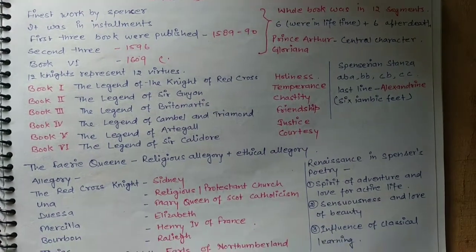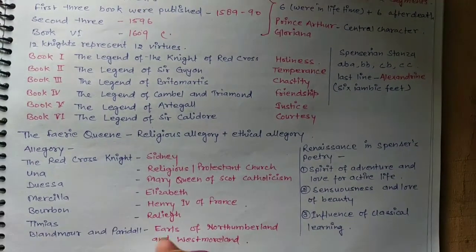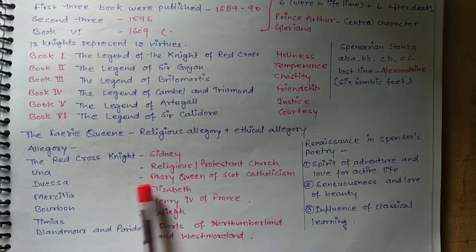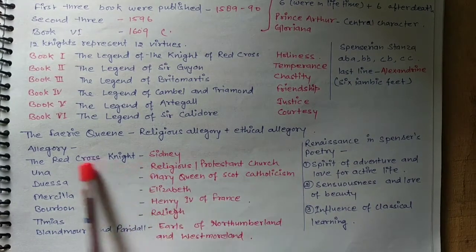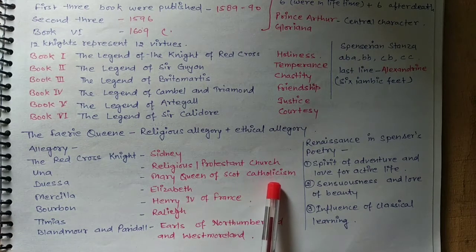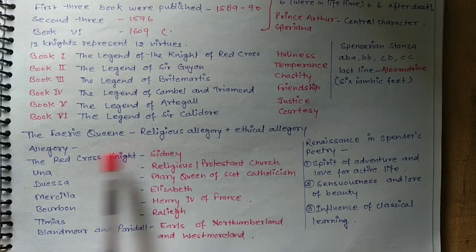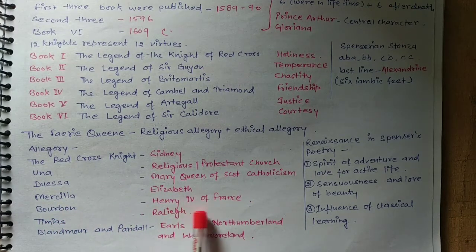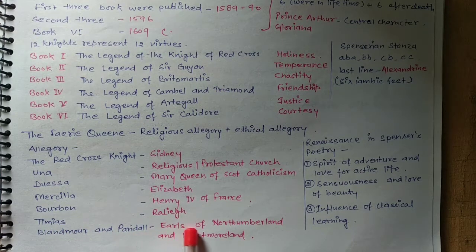There are some characters which show allegorical elements. The Red Cross Knight represents Sidney and also the religious Protestant Church. Duessa represents Mary Queen of Scotland and Catholicism. Marcella represents Elizabeth Bourbon / Henry IV of France. Timias represents Raleigh, and Blandmore and Paridell represent the Earl of Northumberland and Westmoreland.